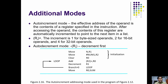Two more addressing modes are auto increment and auto decrement, also called additional modes. In auto increment, after accessing the data, the content of the register is automatically incremented to point to the next item in the list. Similarly, in auto decrement, after accessing the data, the content of the register is automatically decremented to point to the next item in the list. Based on these ways, the processor can access the data. This is all about addressing modes.